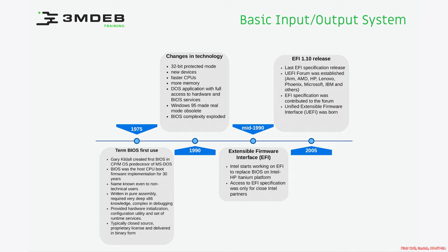Jumping to 1990, we suddenly got 32-bit processors with protected mode. We had far more memory than BIOS could handle, and applications fully accessing hardware through BIOS services were facing the upcoming Windows 95. 3D complexity exploded because of more hardware and more sophisticated software running in the mid-1990s.